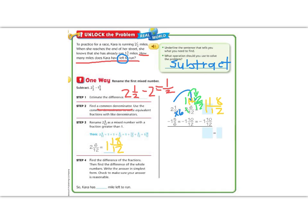Now I can subtract. 18 minus 10 is 8 twelfths, and 1 minus 1 is 0, so I'm left with 8 twelfths. But 8 twelfths is not in simplest form, because 4 goes into both 8 and 12. So I need to reduce: 4 goes into 8 two times, and 4 goes into 12 three times, giving me two-thirds. So Kara has two-thirds of a mile left to run. My estimate was one-half, and one-half and two-thirds are pretty close.